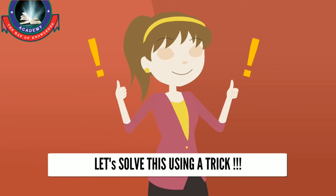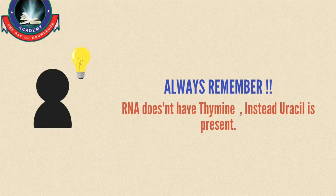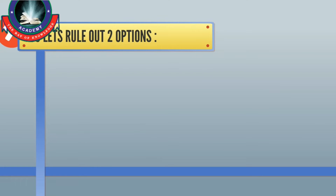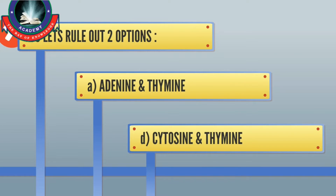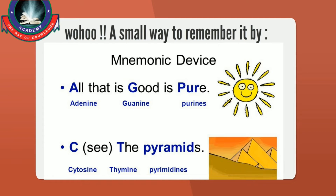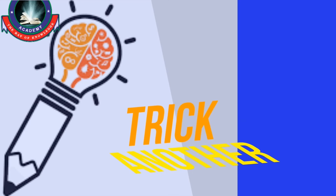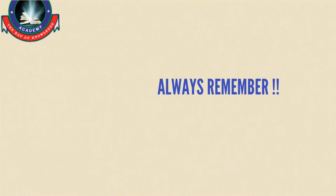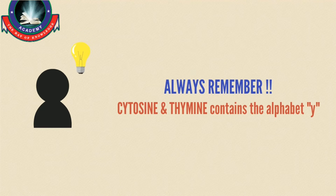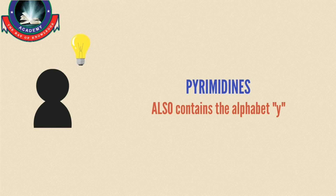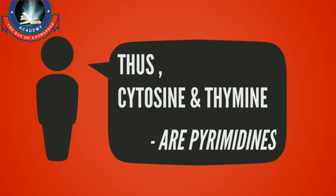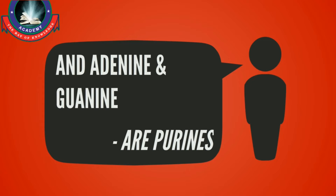Let's solve this using a trick. When we are talking about RNA, we know thymine doesn't count — instead of thymine, we have uracil in RNA. So let's strike out options containing thymine: we cancel out Option A and Option D. We also have a mnemonic: 'All that is gold is pure. See the pyramids.' This indicates adenine and guanine are purines, whereas cytosine and thymine are pyrimidines. Another short trick: the words cytosine and thymine both contain the alphabet Y, and so does the word pyrimidines. Therefore cytosine and thymine are pyrimidines, and the rest — adenine and guanine — are the purines.